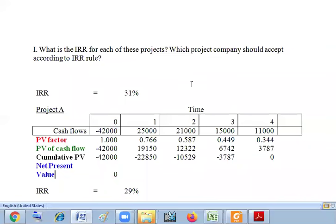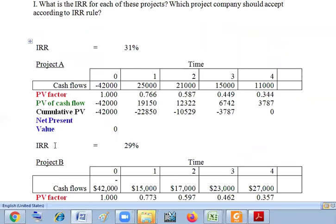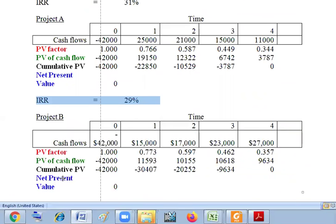Assalamu alaikum dear students. Here are projects with cash flows and IRR of 31%. If you look at this, NPV equals 0, and NPV equals 0 means that IRR is 31%. Project B is 29% and net present value is 0.